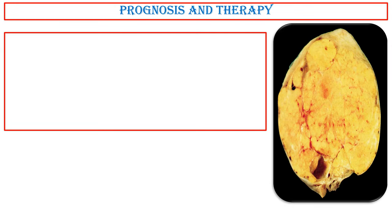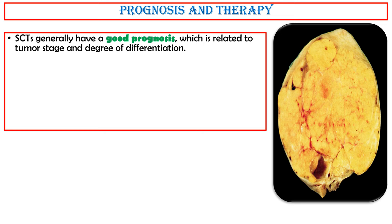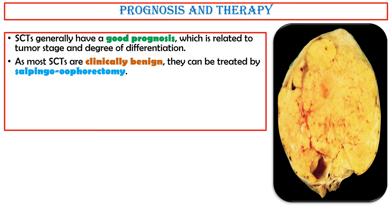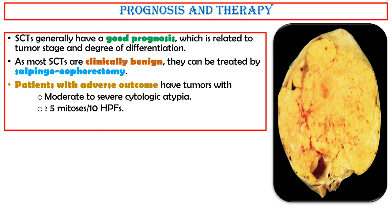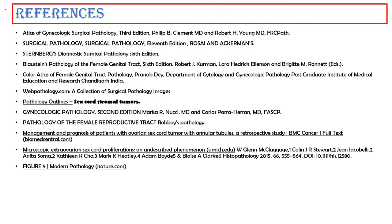Prognosis and Therapy: Sertoli cell tumors generally have a good prognosis, which is related to tumor stage and degree of differentiation. As most Sertoli cell tumors are clinically benign, they can be treated by salpingo-oophorectomy. Patients with adverse outcome have tumors with moderate to severe cytologic atypia, five or more mitoses per 10 high-power fields, and necrosis.